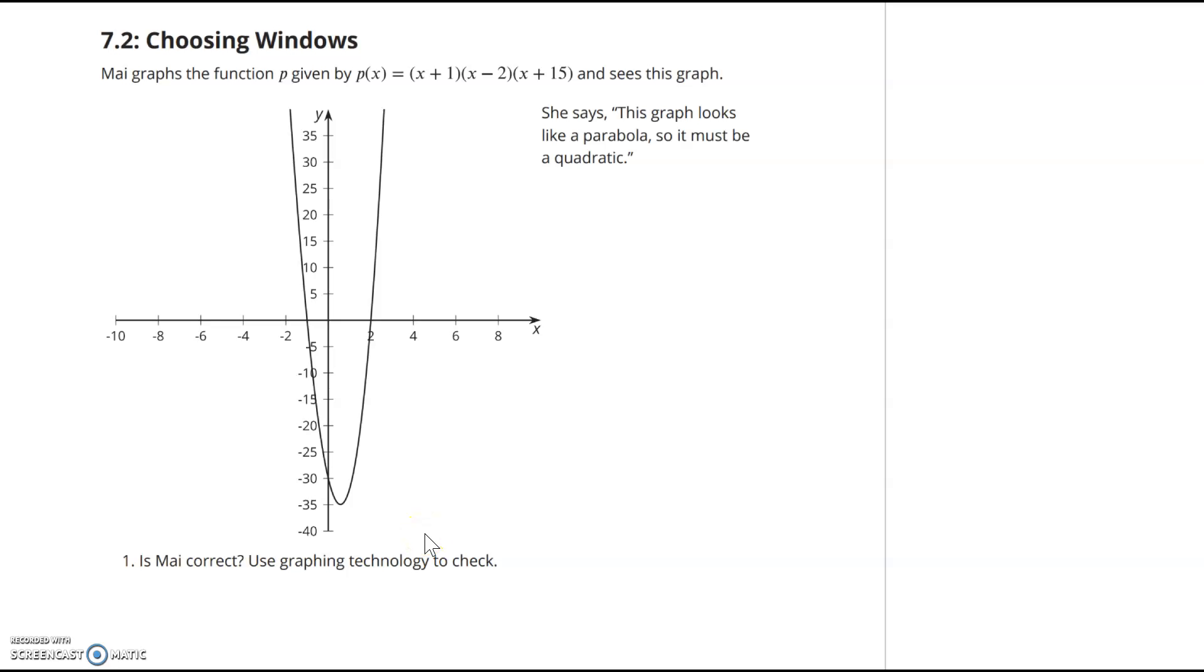Continuing with unit 2 lesson 7, we're going to work on problem 7.2 now. Here we have May, and she graphs the function p, given by p(x) equals the quantity (x+1) times the quantity (x-2) times the quantity (x+15), and she sees this graph. She says this graph looks like a parabola, so it must be quadratic.